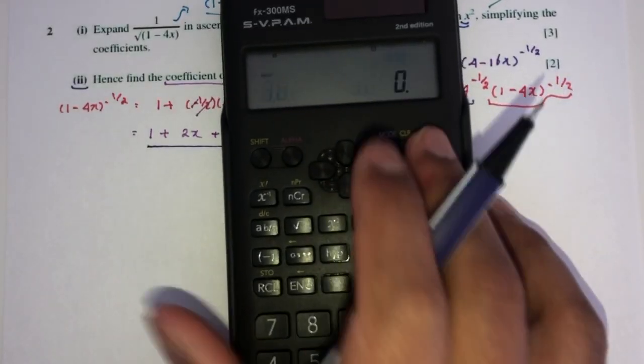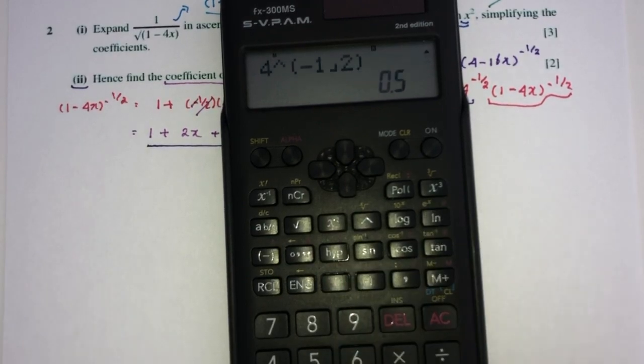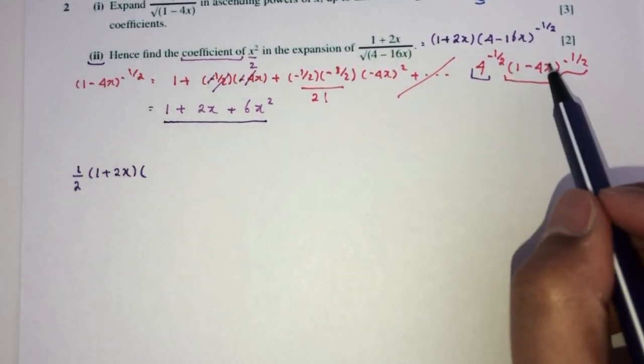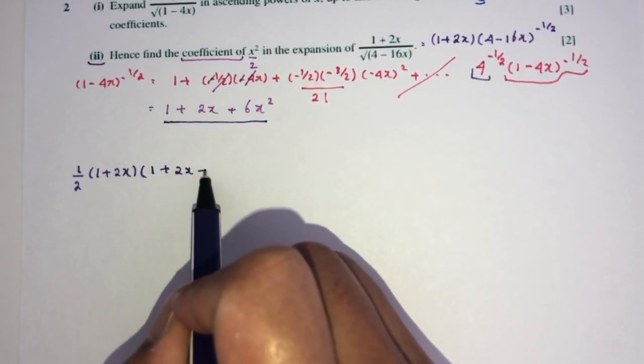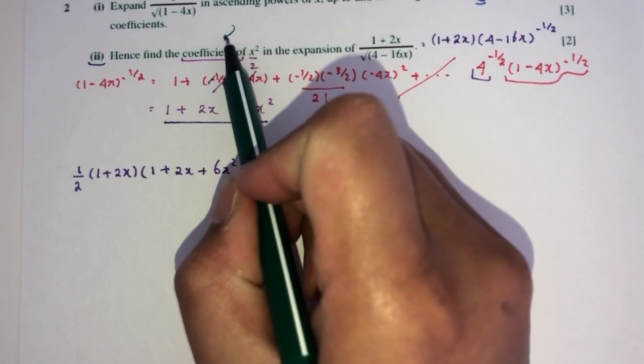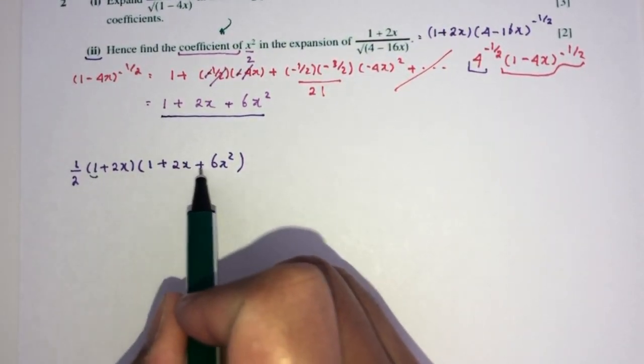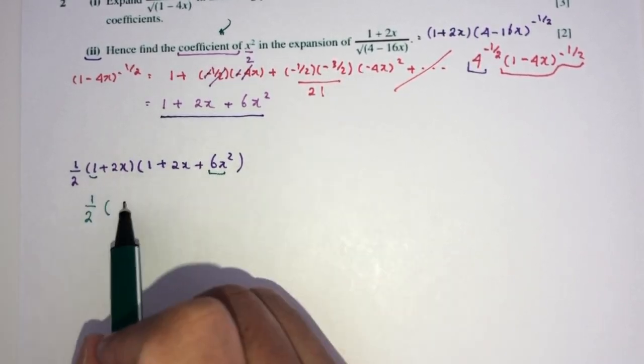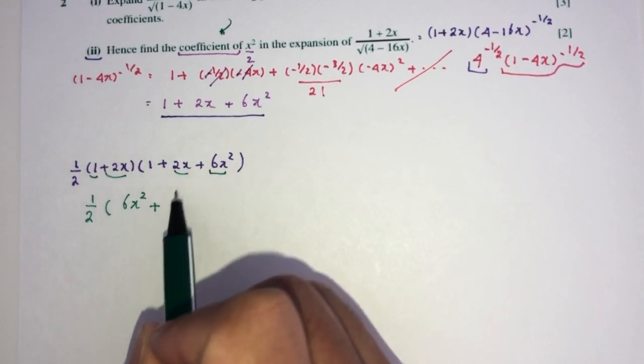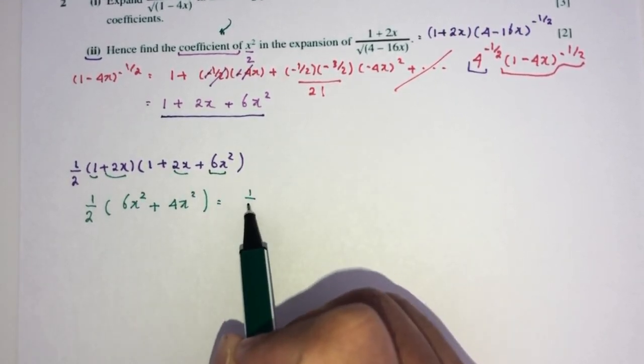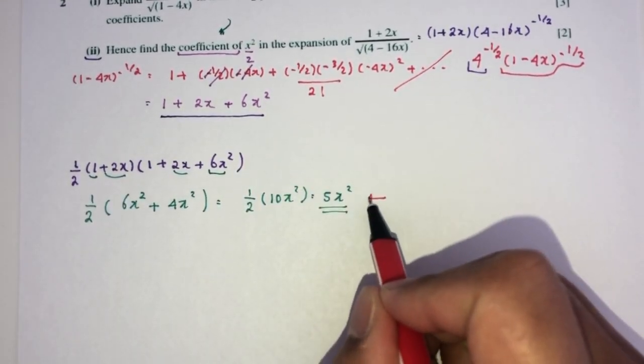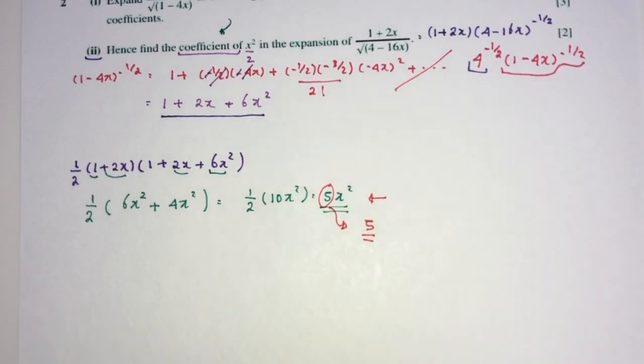Now we can use the value we get from the first part. What is that? 4 power minus half is half. Let's put this in front. You'll have half here, in front. Here we have 1 plus 2x. And here, this is the same as this. That will be 1 plus 2x plus 6x squared. Obviously, there's no need to expand everything. We only need the coefficient of x squared. Let's choose. 1 times which one will give you x squared? This one. Half is outside. 1 times 6x squared. Plus 2x times which one will give you x squared? This one. That will be 4x squared. Here you go, and you have 5x squared. This is your answer for 5. Use your coefficient as your answer for question number 2.